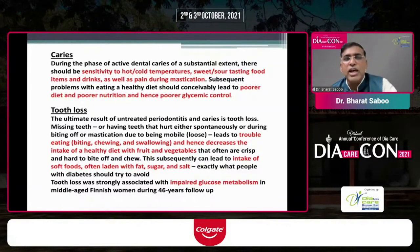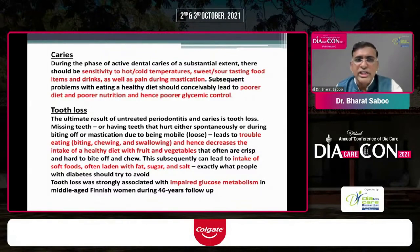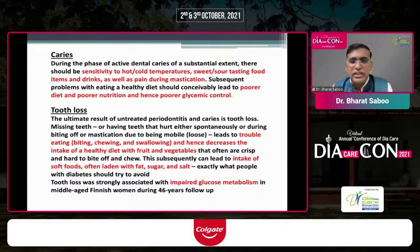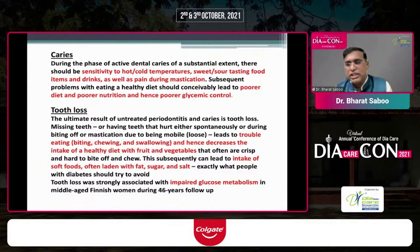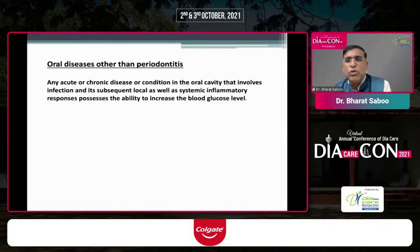Caries also adversely affects diabetes. When a patient has caries, sensitivity to hot and cold is altered, sweet or sour tasting is altered, and there can be pain during mastication. This leads to poor nutrition and poor glycemic control. The same applies to tooth loss — when teeth are lost, trouble eating decreases the intake of healthy foods like fruits, vegetables, and coarse grains, leading to more intake of soft foods laden with fat, sugar, and salt, which impairs glucose metabolism.